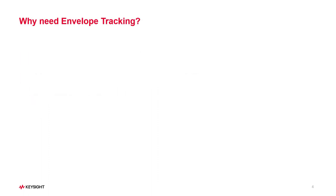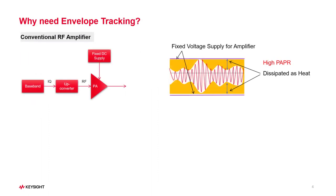You may ask why we need envelope tracking for the PA test. Let's look at the block diagram of a typical transmitter system. For a conventional RF amplifier, the power supply is designed to be a fixed DC. This kind of design has high transmitter efficiency for systems like GSM, which has a form of modulation with no amplitude variations. However, in modern communication systems like 5G NR or Wi-Fi 7, in order to achieve increased data throughput in limited radio frequency boundaries, more complicated modulation is used, like OFDM.